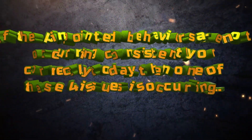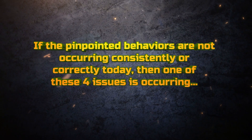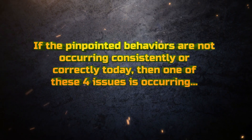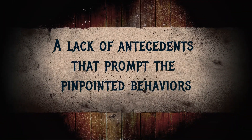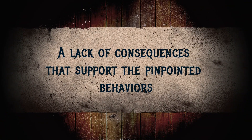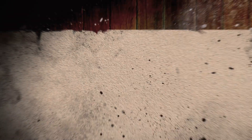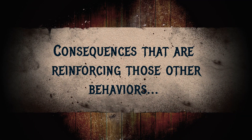This is how you determine organizational change. King and Kieran 2021 wrote that if the pinpointed behaviors are not occurring consistently or correctly, then one of four issues is occurring: number one, a lack of antecedents that prompt the pinpointed behavior; number two, a lack of consequences that support the pinpointed behavior; number three, antecedents that are prompting other behaviors which conflict with the pinpointed behaviors.